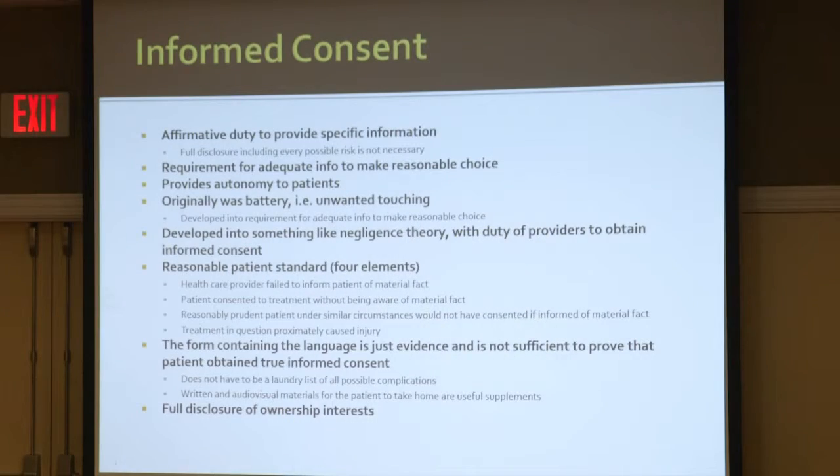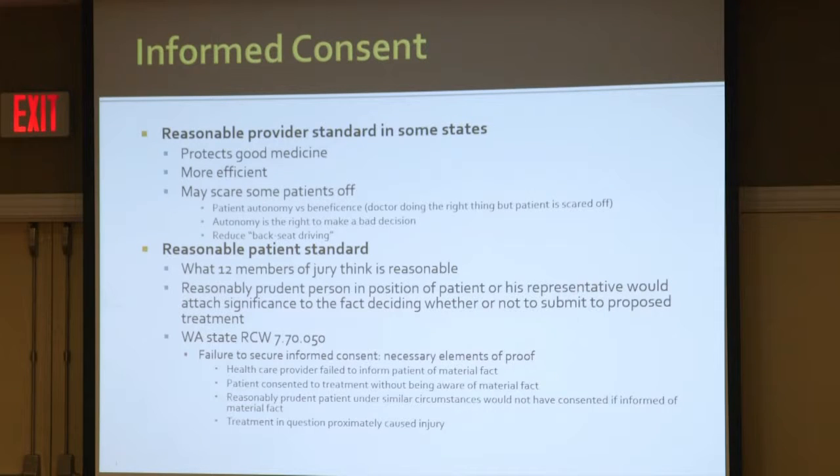In informed consent, it's critical — particularly regarding practice ownership and safe harbor elements such as a surgery center or physical therapy — that you disclose ownership interests. If you tell a patient, 'We can do your surgery in the surgery center across the hall,' that's not enough. You have to say, 'I own a portion of that, and you can choose not to go there — you can go to a hospital or another surgery center if you want.' You need to disclose ownership.